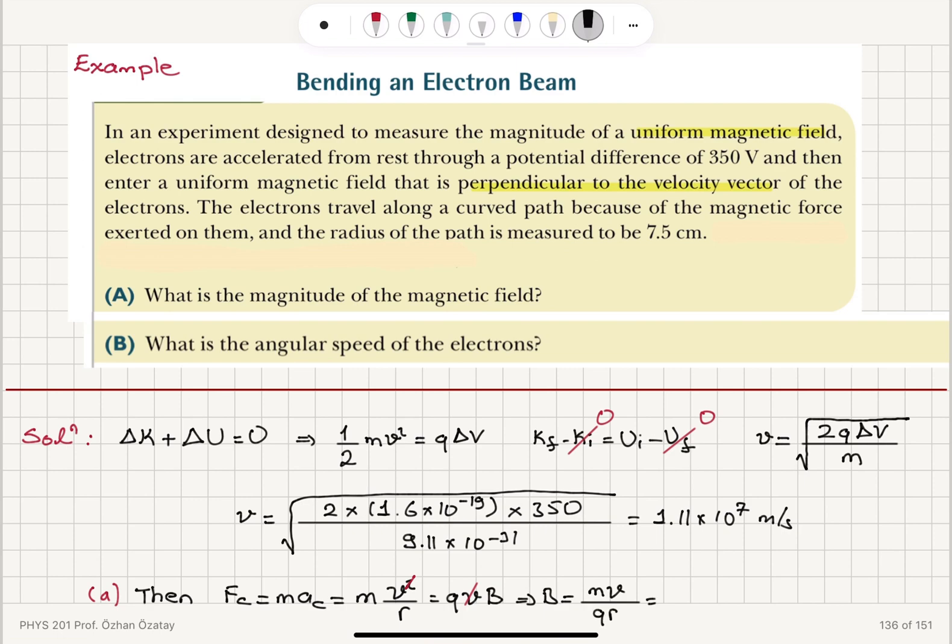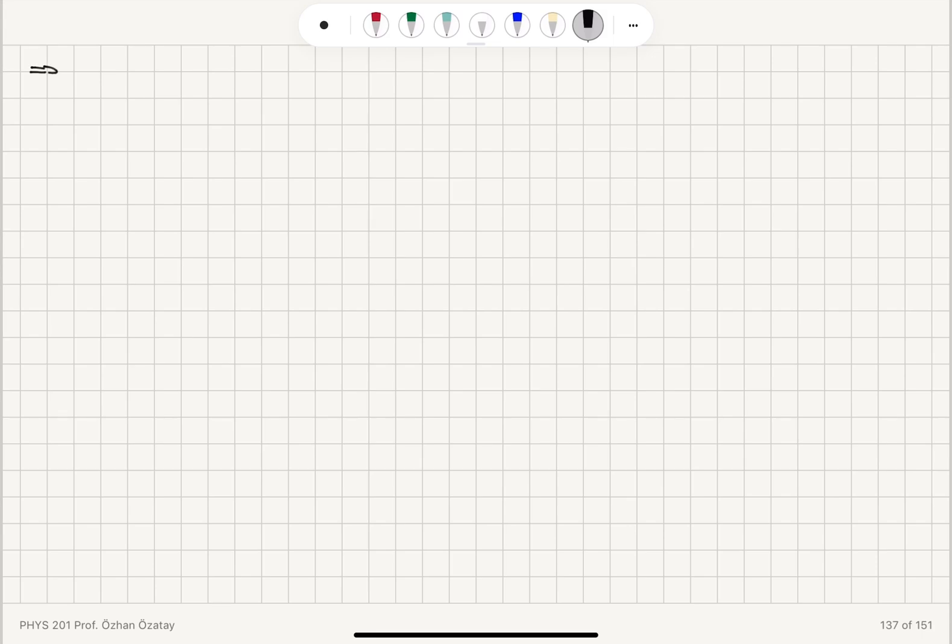So, if I substitute the numbers here this is going to be 9.11 times 10 to minus 31 kilograms multiplied with 1.11 times 10 to 7 meters per second divided by the charge 1.6 times 10 to minus 19 coulombs multiplied by the radius 7.5 times 10 to minus 2 meters. So, we will get our final answer for the magnetic field as 8.4 times 10 to minus 4 Tesla. So, this will be the magnetic field, the uniform magnetic field which the electron enters.